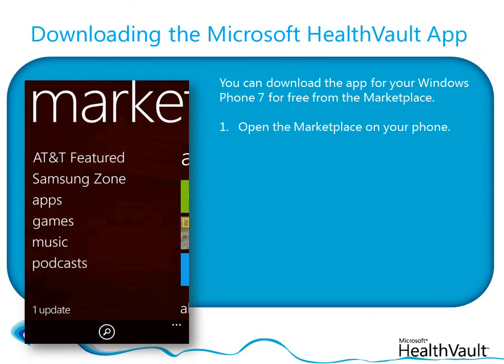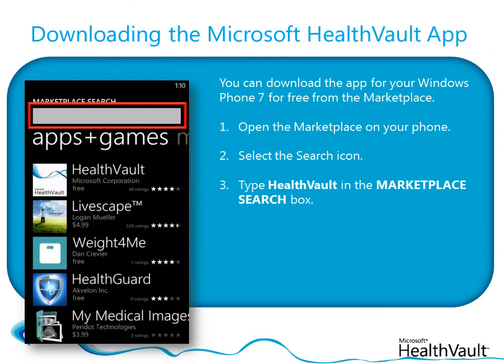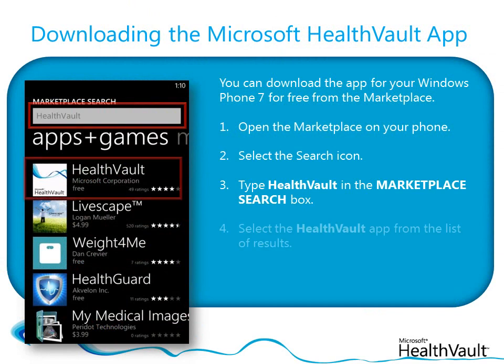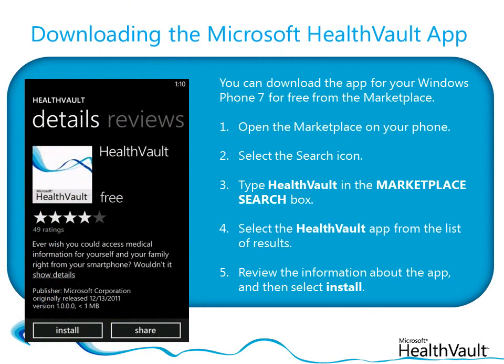You can download the app for your Windows Phone 7 for free from the Marketplace. Open the Marketplace on your phone, select the search icon, and then enter the word HealthVault in the Marketplace search box. Select the HealthVault app from the list of results, review the information about the app, and then select Install to download it to your phone.